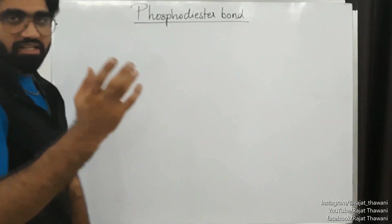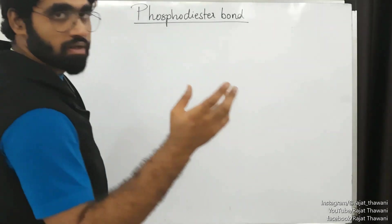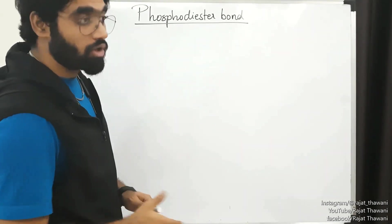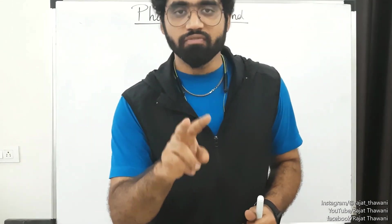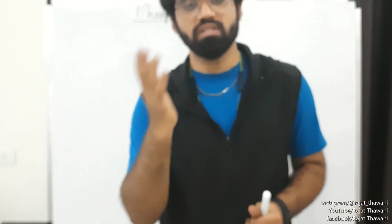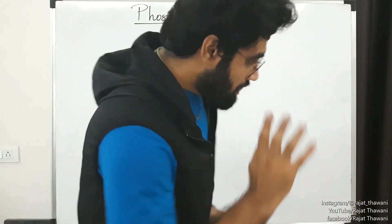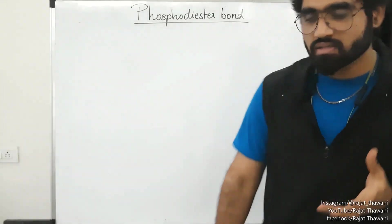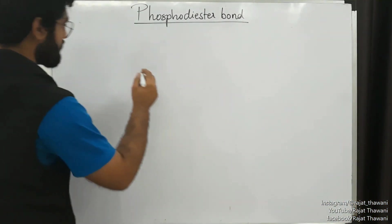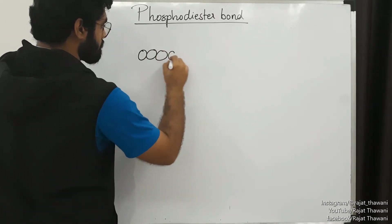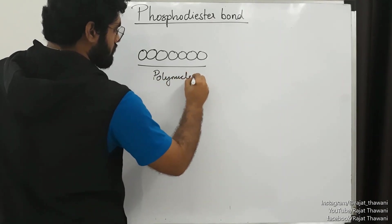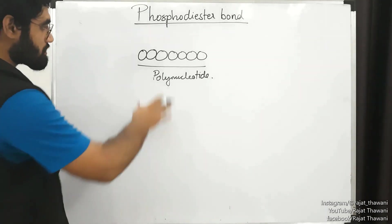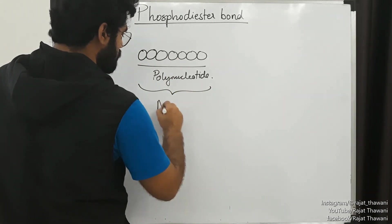Today we will be discussing - as I explained last time - that the nucleotide is the monomer of nucleic acids. I'm going to provide the link of both previous videos in the description; I would prefer you visit those videos before coming back to this one. What I'm saying is that there are multiple nucleotides connected to each other forming a long chain of polynucleotide, also called nucleic acid.